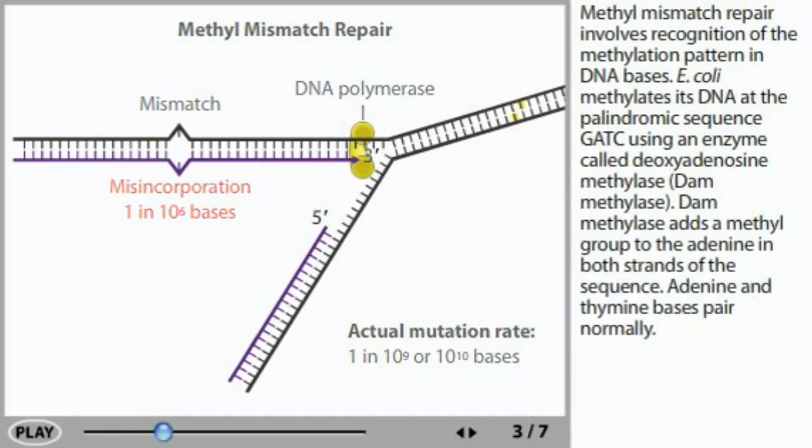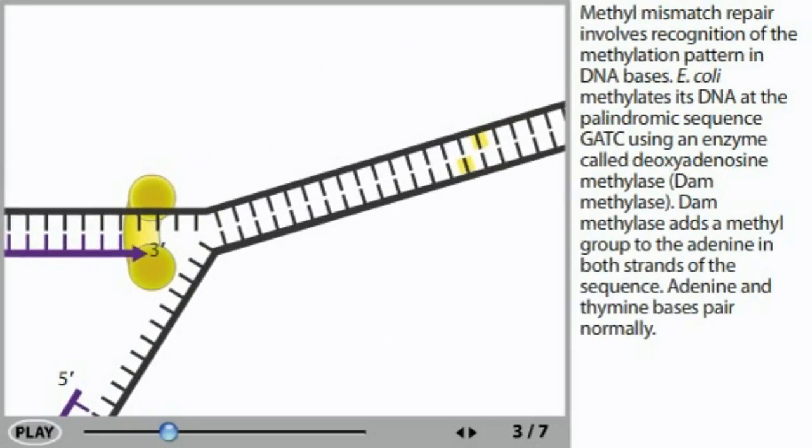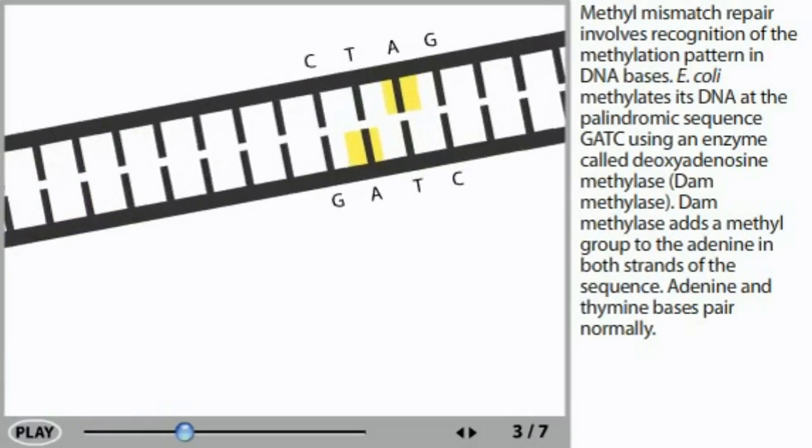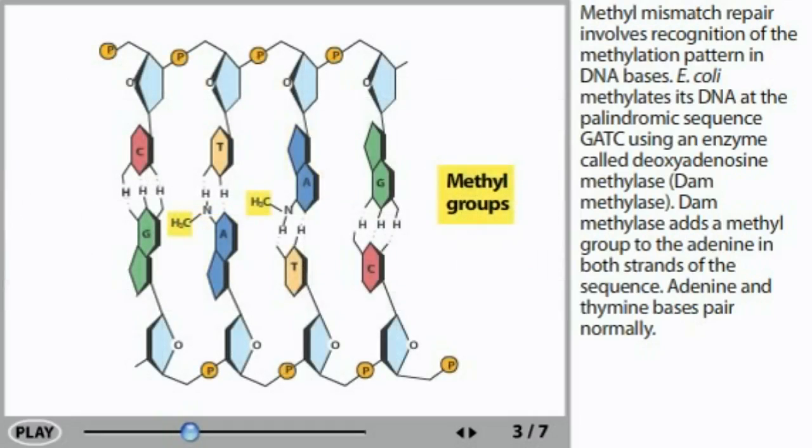Methyl mismatch repair involves recognition of the methylation pattern in DNA bases. E. coli methylates its DNA at the palindromic sequence GATC using an enzyme called deoxyadenosine methylase or DAM methylase. DAM methylase adds a methyl group to the adenine in both strands of the sequence. Adenine and thymine bases pair normally.